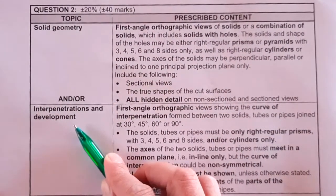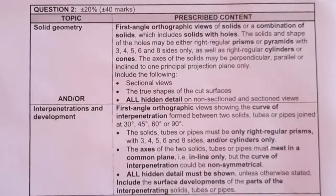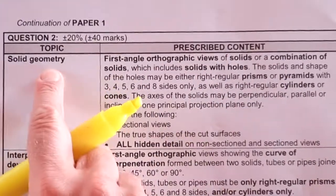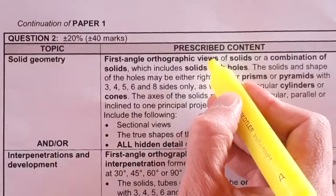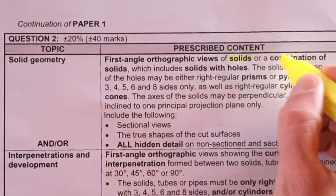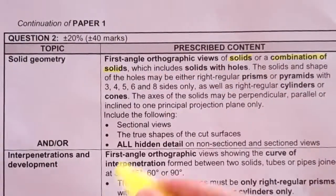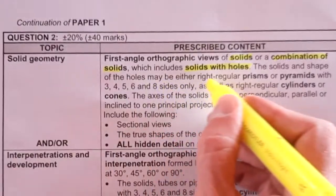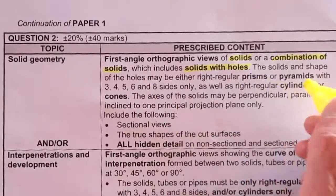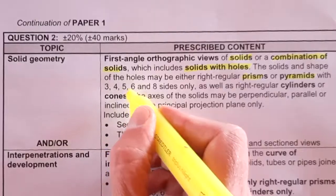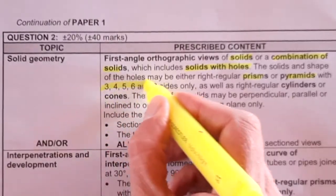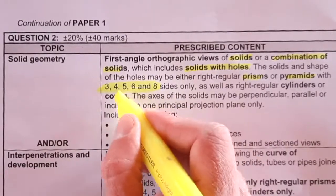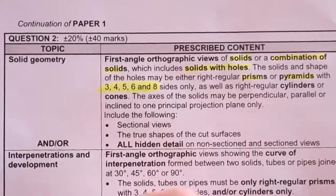Now, what do they define for solid geometry and interpenetration and development? This is in the exam guidelines — link in the download below. Solid geometry will be a first-angle orthographic drawing of solids or a combination of solids, which includes solids with a hole in them. The solids and the shape of the holes may be either right regular prisms or pyramids with three, four, five, six, or eight sides. This is very important — you need to be able to construct the octagon, hexagon, pentagon, and so on.